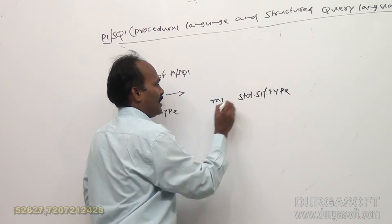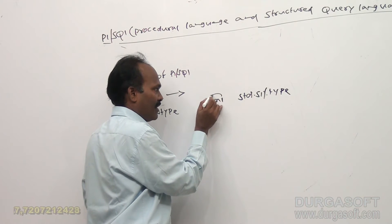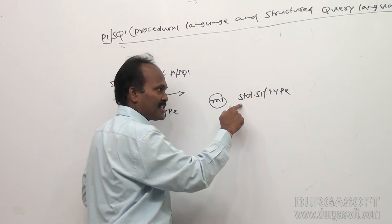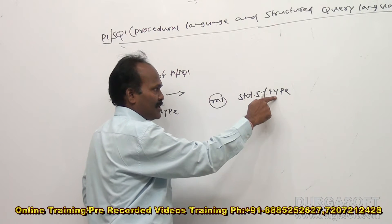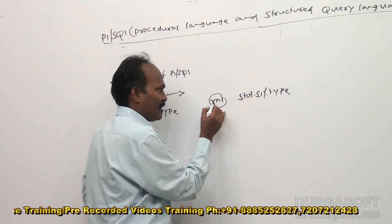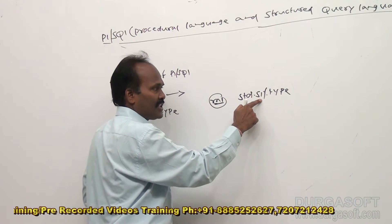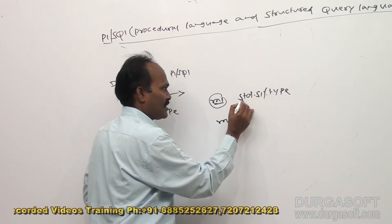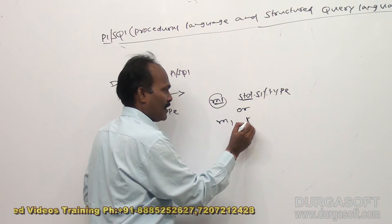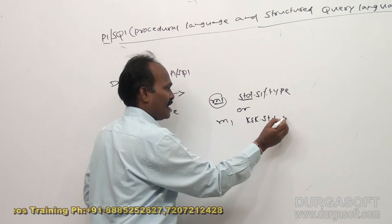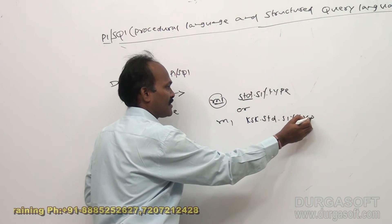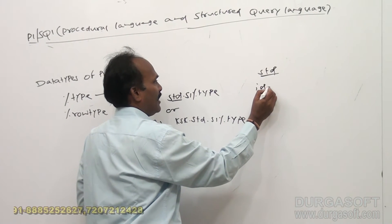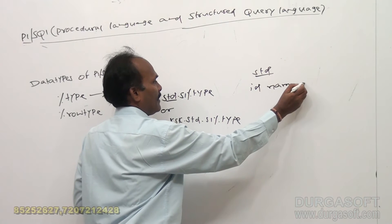What it is going to do? PL/SQL is going to declare m1 whose data type is same as s1 type. So s1 is a column of std table. That means percentage type is going to give data type of a column. Now m1 is declared same as s1 type. What is s1 here? s1 is available in std, or you can write like this also: suppose std is available in our ksk schema, ksk dot std dot s1 percentage type.